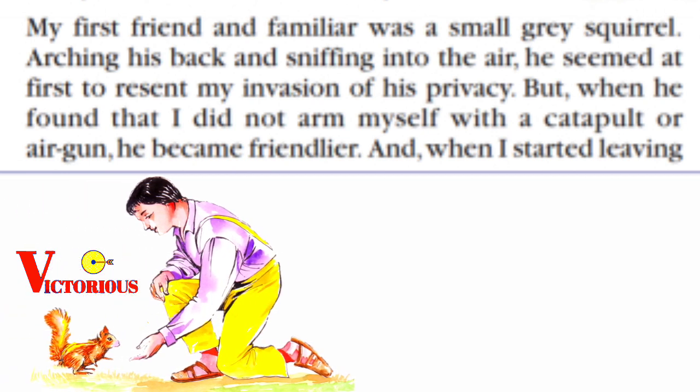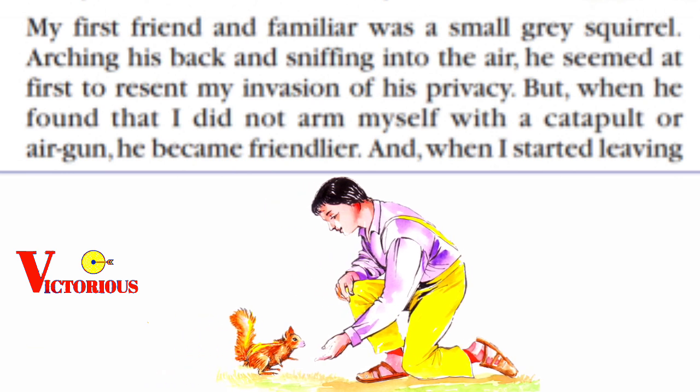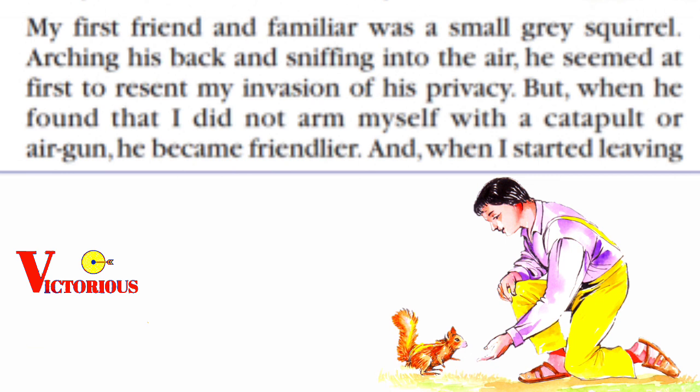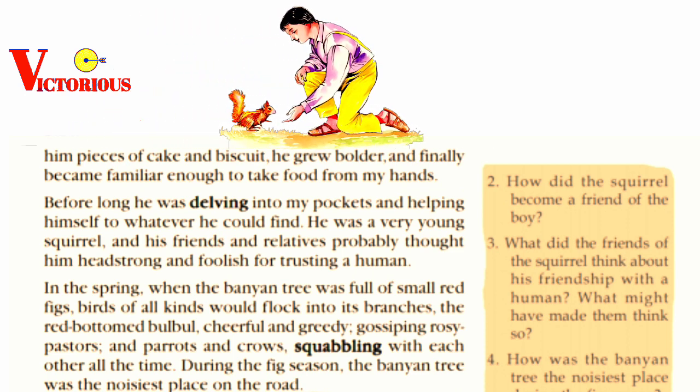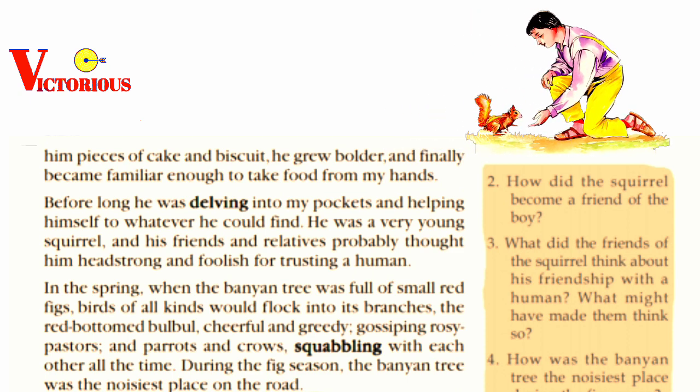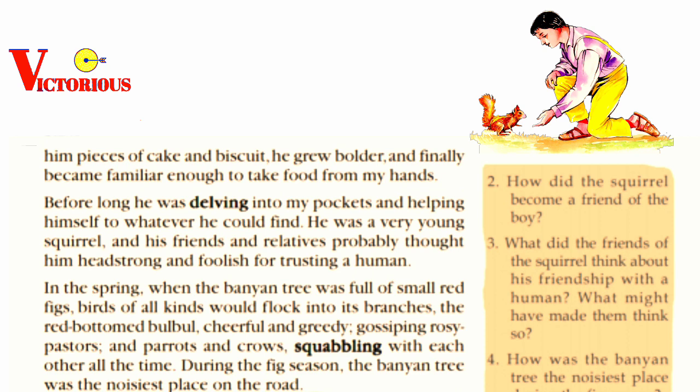Look at the second paragraph: My first friend and familiar was a small gray squirrel, lurking his back and sniffing into the air. He seemed at first to resent my invasion of his privacy. But when he found that I didn't arm myself with a catapult or air gun, he became friendly. And when I started leaving him pieces of cake and biscuit, he grew bold, and finally became familiar enough to take food from my hands. Before long he was delving into my pockets and helping himself to whatever he could find. He was very young, and his friends and relatives probably thought him headstrong and foolish for trusting a human.